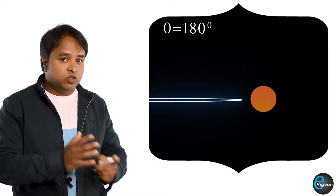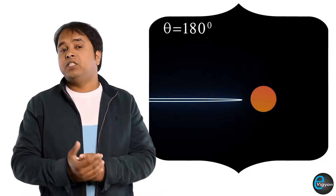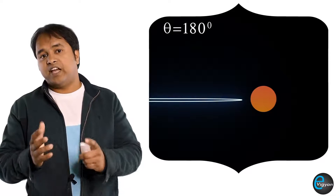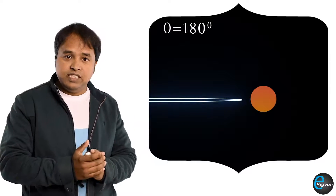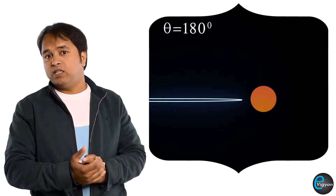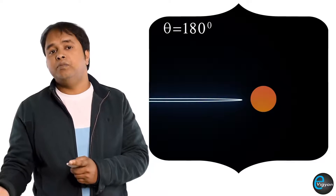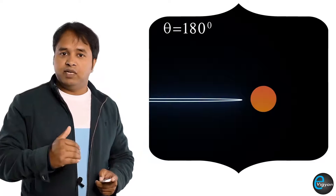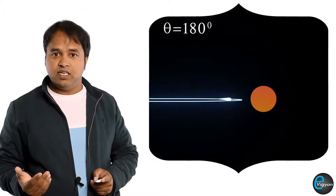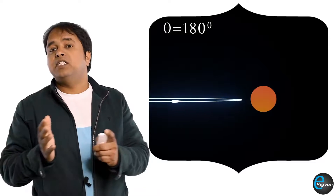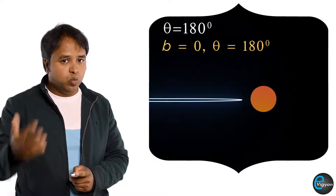Just like the distance of closest approach and scattering angle, the impact parameter is also a very important factor. The impact parameter is the perpendicular distance between the line of incidence of the alpha particle and the center of the nucleus, and it is denoted by b. For an alpha particle directed towards the center of the nucleus, the impact parameter is 0 — that is, for b = 0, θ = 180°.